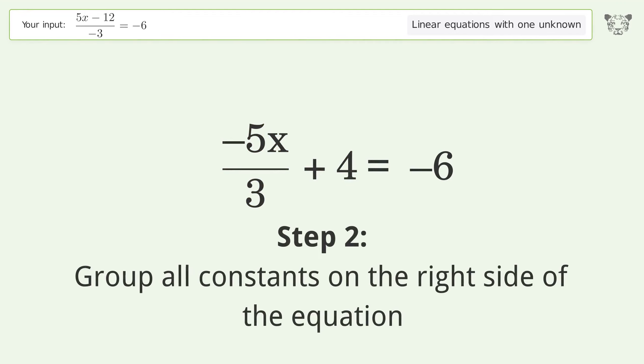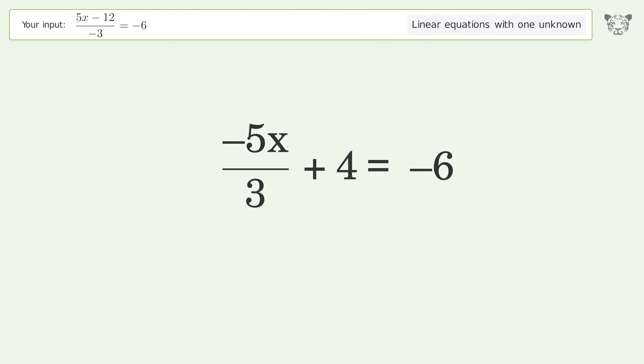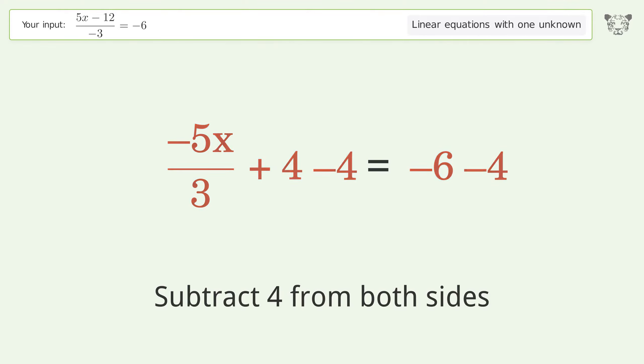Group all constants on the right side of the equation. Subtract 4 from both sides. Simplify the arithmetic.